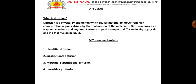The two mechanisms of interstitial-substitutional diffusion are the dissociative and kick-out mechanisms. In the kick-out mechanism, a self-interstitial of host atoms replaces the impurity atom at a lattice site and pushes it to an interstitial site. These impurity atoms then diffuse to adjacent substitutional sites, creating new self-interstitials.